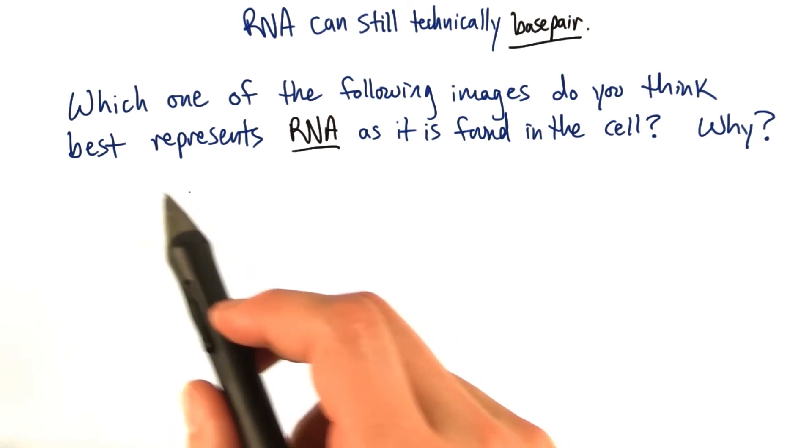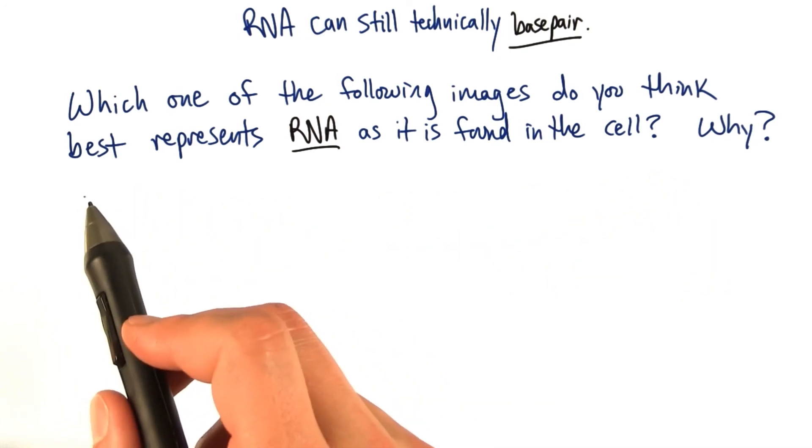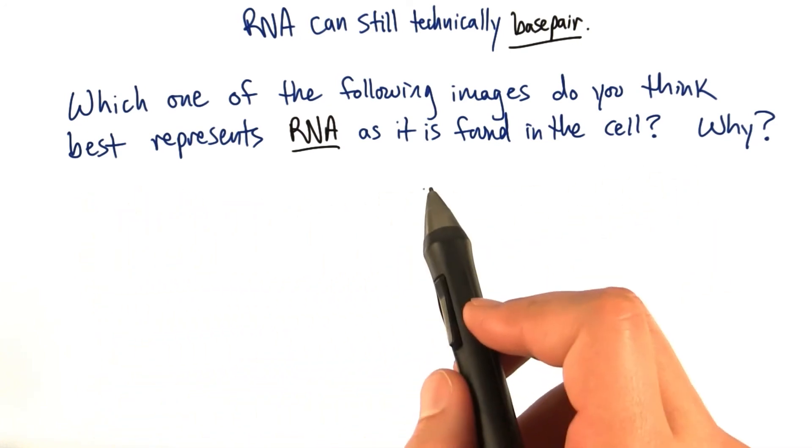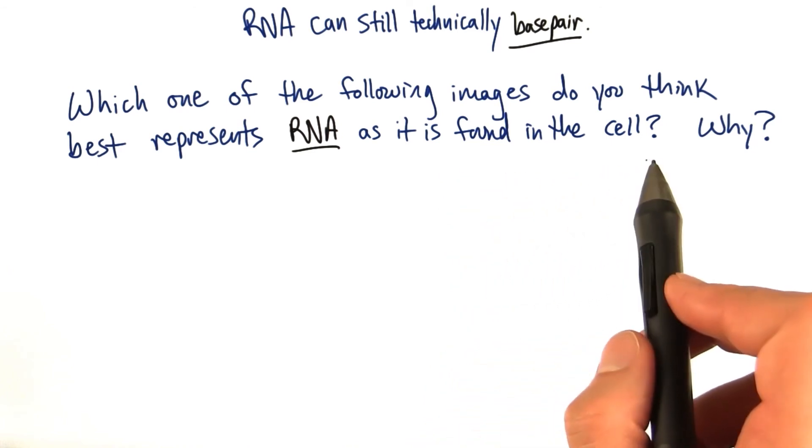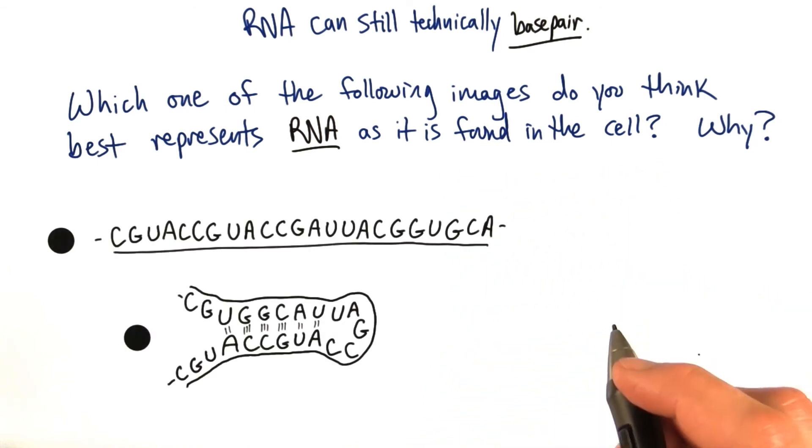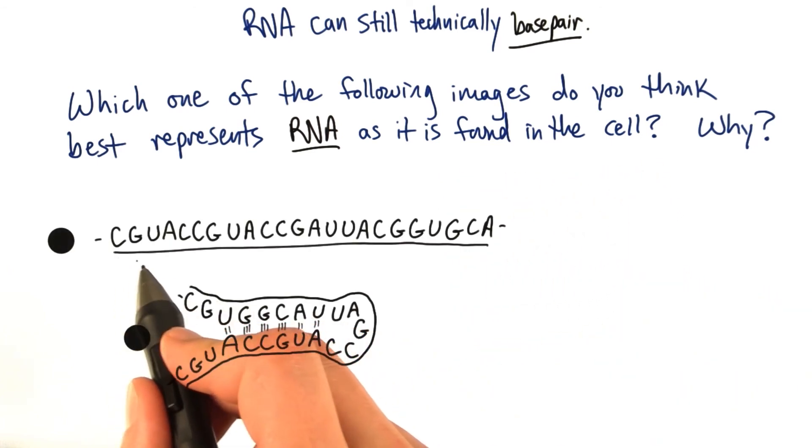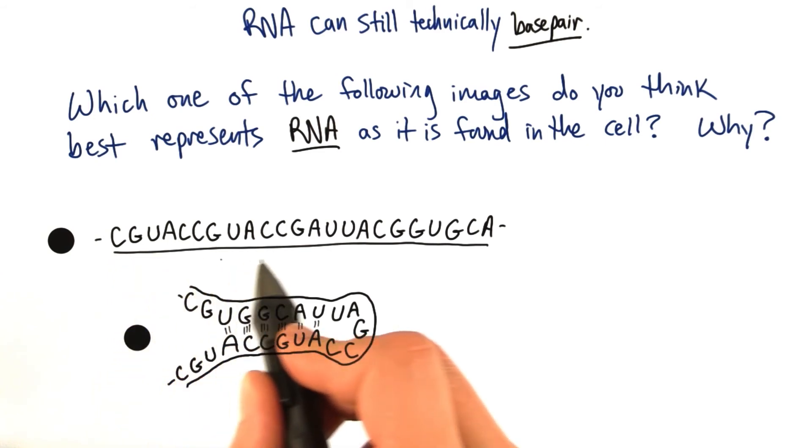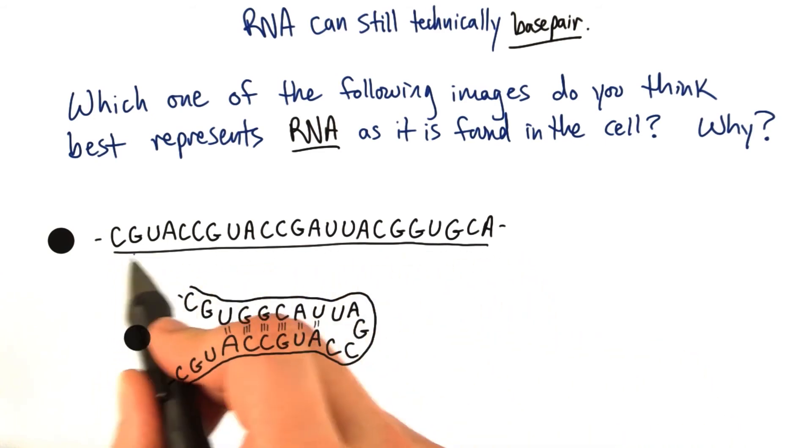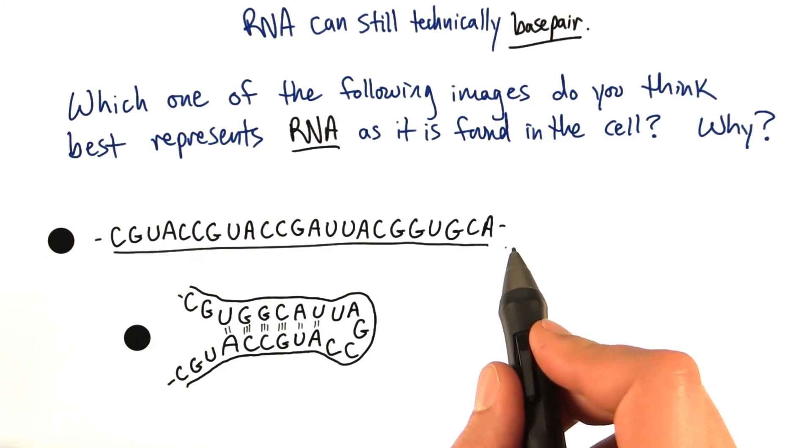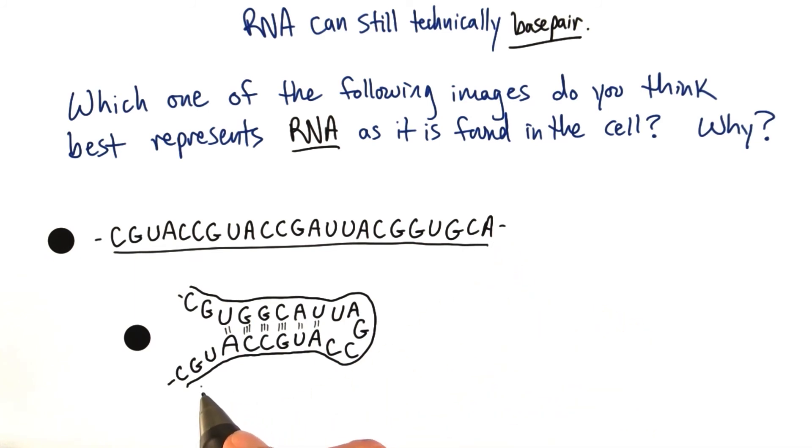I want you to see if you can tell me which one of the following images do you think best represents RNA as it is most likely found in the cell. Do you think you'd see a single strand of RNA just as a straight, linear strand, all laid out like this first option? Or do you think you would see something that looks like this, where the single strand has folded back on itself in certain areas where it appears there may be some base pairing?